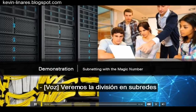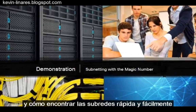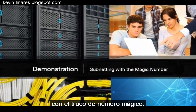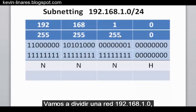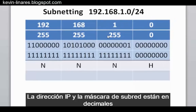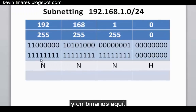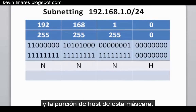This video focuses on subnetting and how to find your subnetworks easily and quickly using the magic number trick. We're subnetting a 192.168.1.0 slash 24 network. The IP address and subnet mask are shown in both decimal and binary, with the network portion and host portion of the subnet mask labeled.